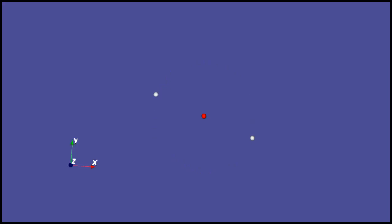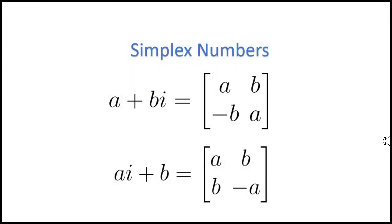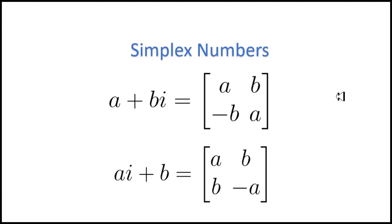So if you want clockwise rotations to be your convention, you would use this matrix. If you want counterclockwise to be your convention, you use the other matrix. All I was able to verify so far is that both matrices create rotations. But it turns out the rules for I on the backward diagonal are different than the rules for I on the forward diagonal.